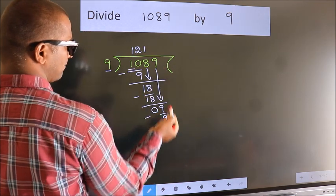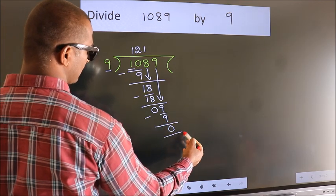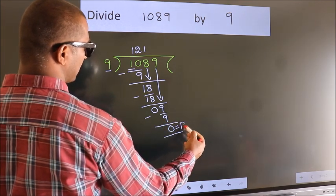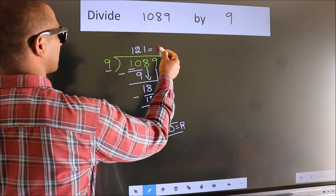No more numbers to bring it down. So we stop here. This is our remainder. This is our quotient.